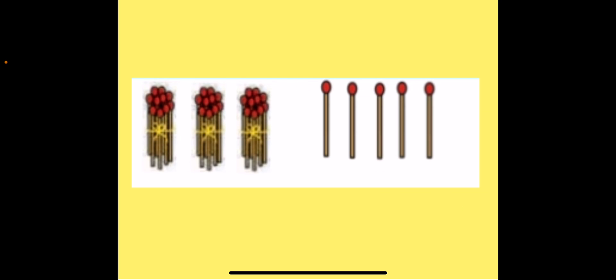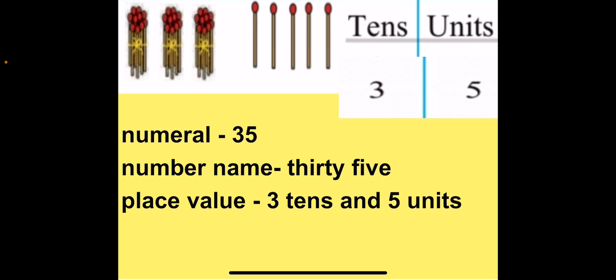Now when we add 1 more unit to 34 we get 3 tenths and 5 units. With this we get our next number, that is 35, where 3 is in tenths place and 5 is in units place. The number name for 35 is THIRTY-FIVE. The place value for 35 is 3 tenths and 5 units. Now we will move on to the next number.